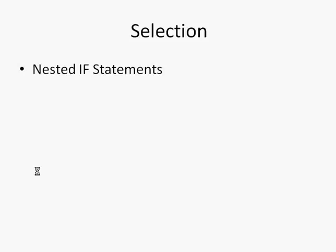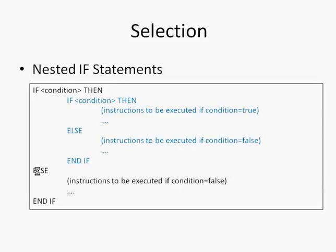There are things called nested if statements, where we can have an if-then-else statement like the one in black there. But if the condition is true, then we might need to test something else. So we have a nested if statement in blue there. And you can nest as many as you like. It can get a bit messy to be able to read your code properly, but that is something that you can do.